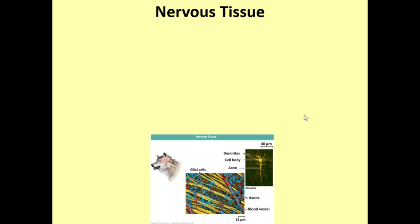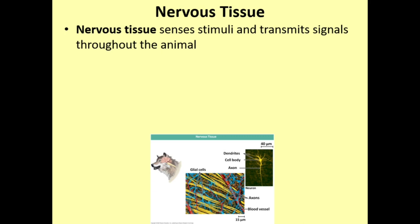Nervous tissue senses stimuli and transmits signals throughout the animal. Stimuli can be external — light, sound, touch — or internal, such as changes in blood glucose levels, hormone levels, or temperature. The nervous tissue detects stimuli both internally and externally, transmits that signal to the central nervous system — the brain and spinal cord — which determines a response to that stimulus and sends one out.